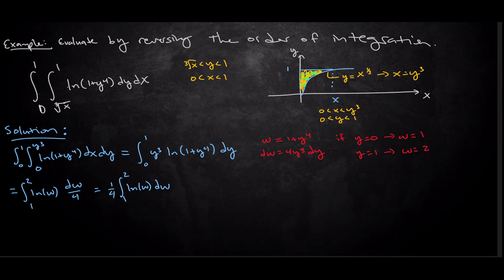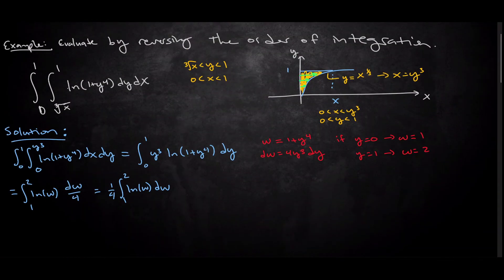Now how do we integrate something like natural log of w? Well you may have memorized the anti-derivative, which is totally fine. But if you don't remember the anti-derivative of natural log of w, you have to do integration by parts. So what we're going to do for integration by parts is uv minus integral of v du.